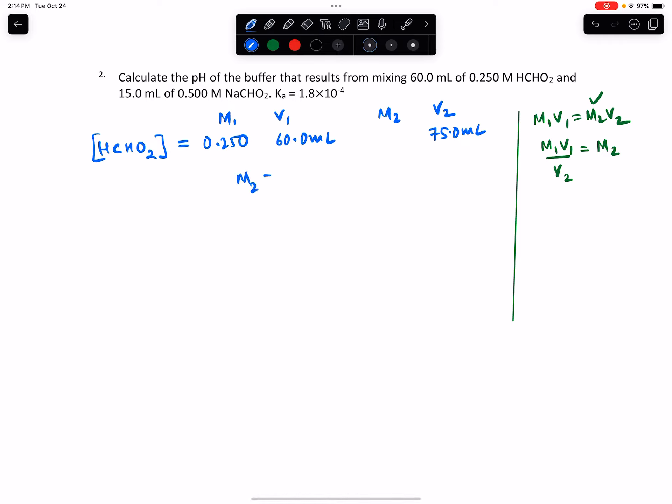M2 = M1V1/V2 = (0.250 × 60.0)/75.0. If we simplify that, the new concentration is 0.200 molar for the acid.